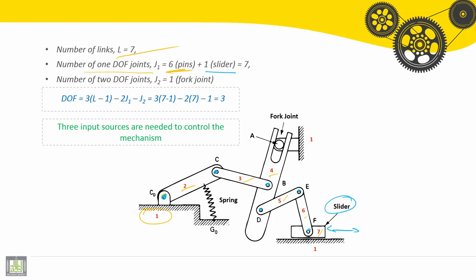Now how many higher pair joints? Two degree of freedom joints, J2. We have one higher pair joint, the fork joint here. It has two degrees of freedom: rotation and translation. Both are independent.